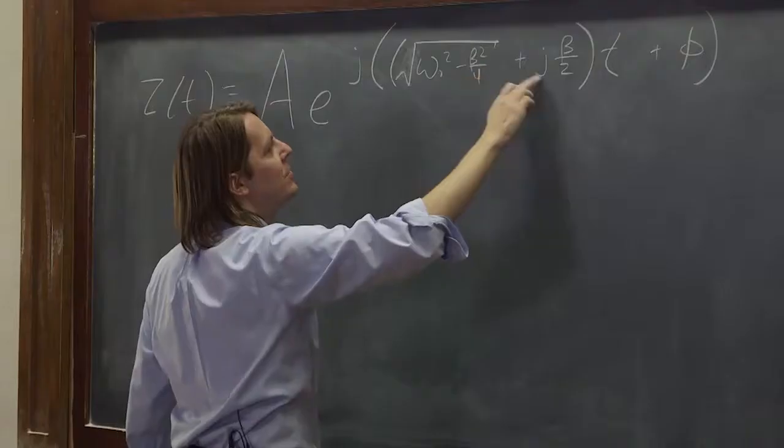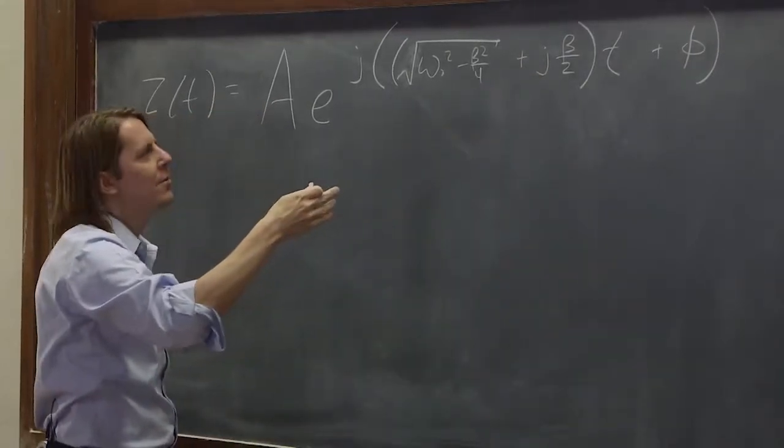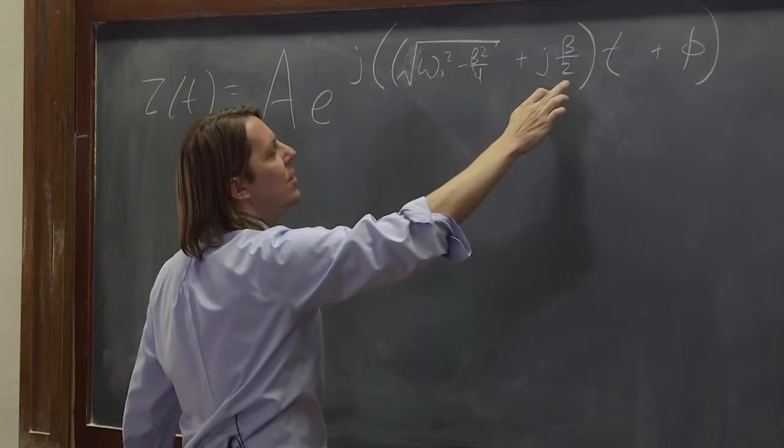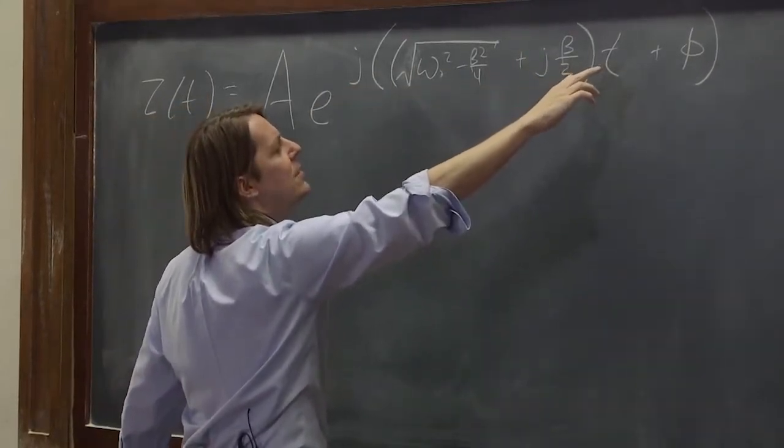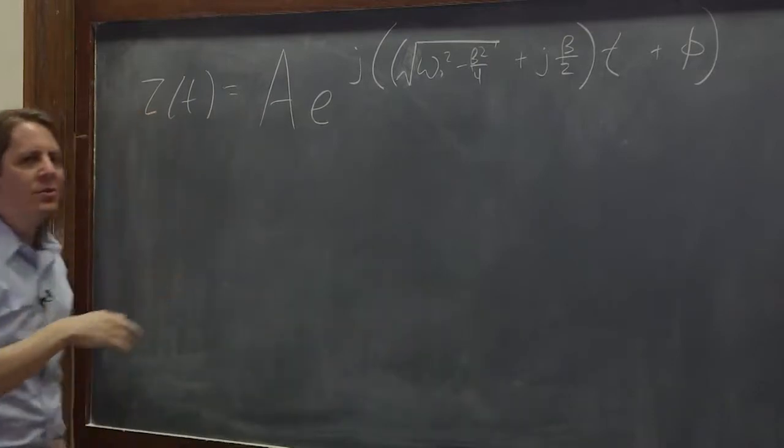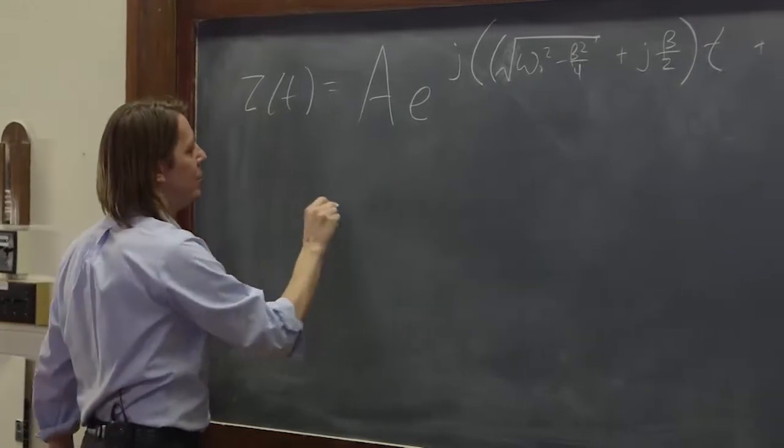If we multiply this J by this J, we actually lose the imaginary exponent. J times J is negative 1. So we actually have an E to the minus beta over 2T. We have an exponential time part that's not complex. Therefore, if we pull it out, it will look different.